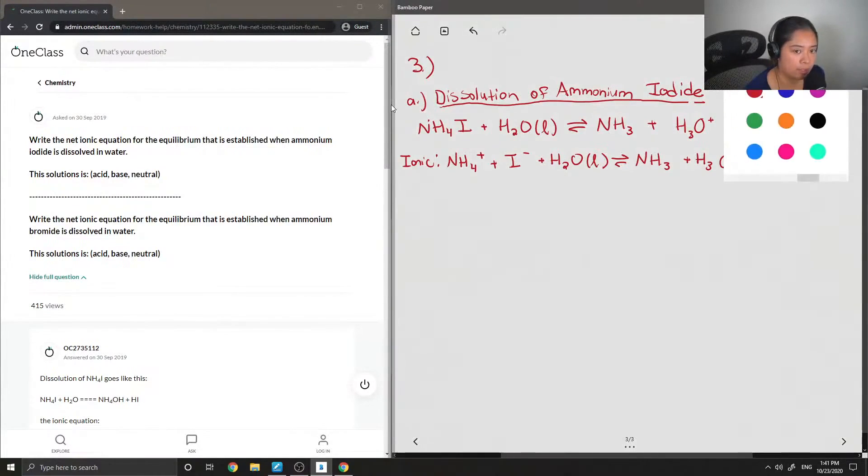So now I'm just going to cross out my spectator ions. Spectator ions are ions that appear on both sides of the equation. So the only spectator ion here is the iodide, and then I'm going to write my net equation.